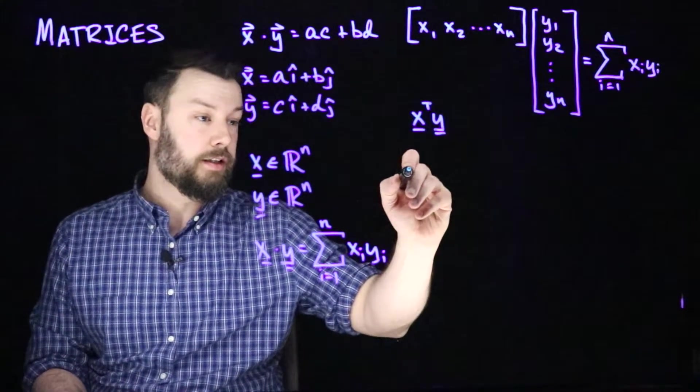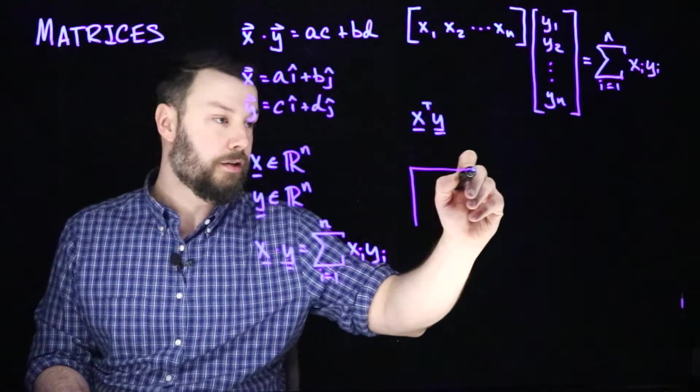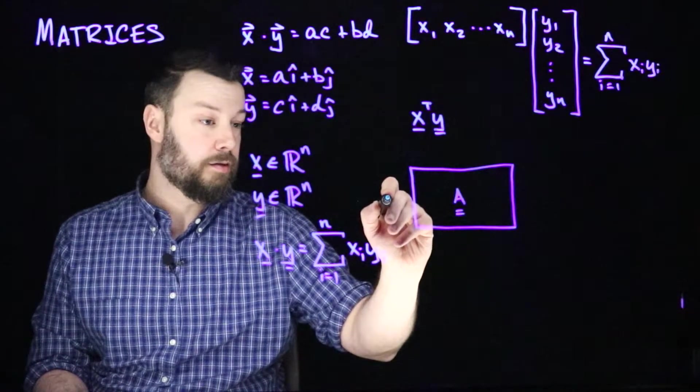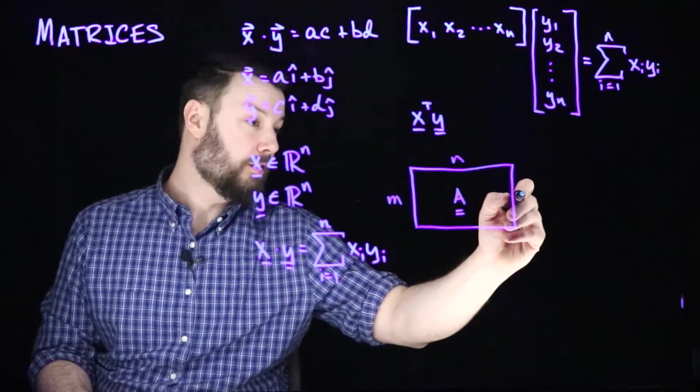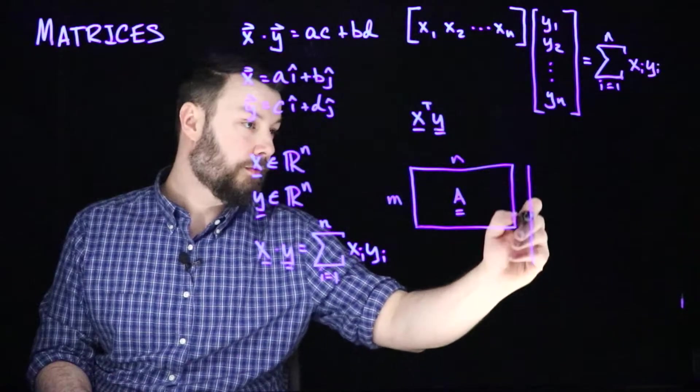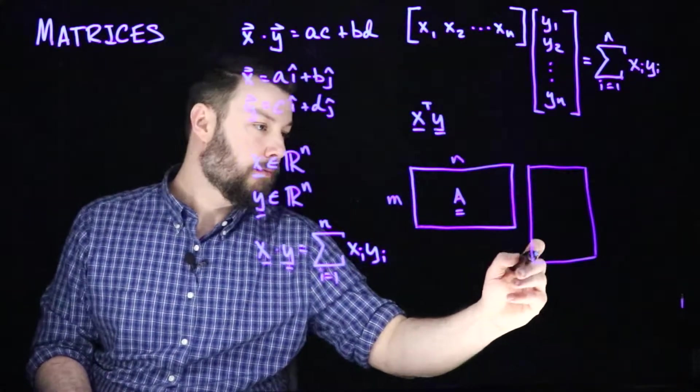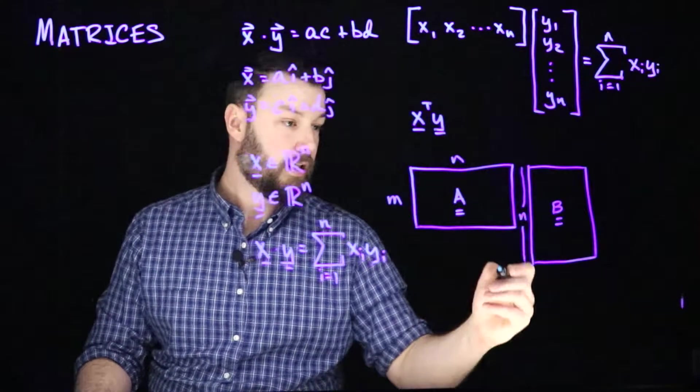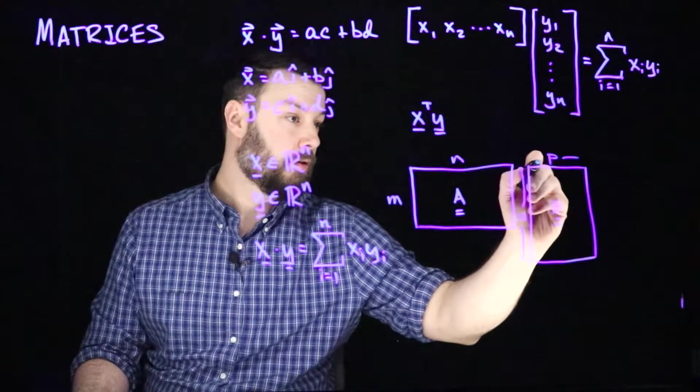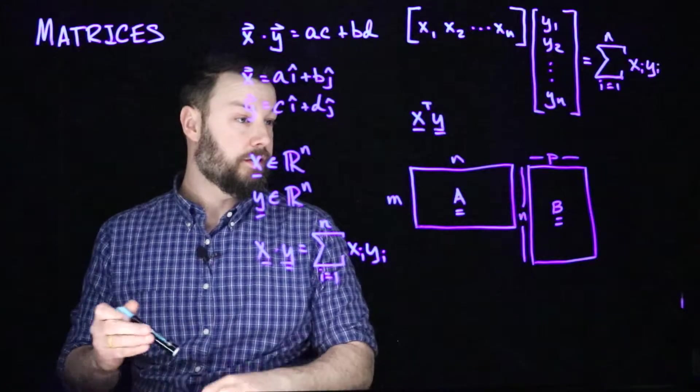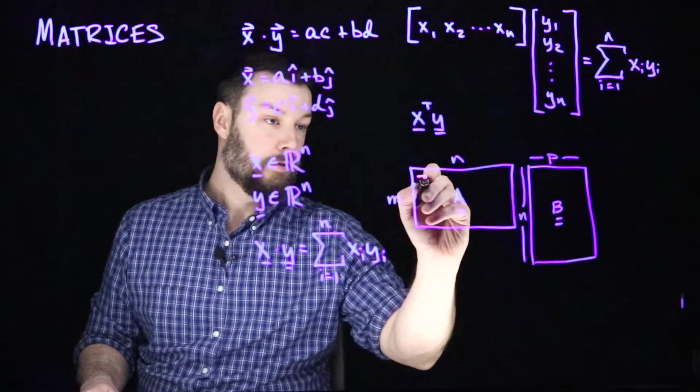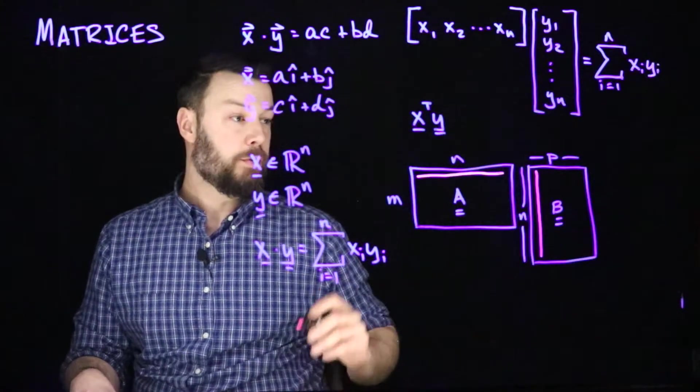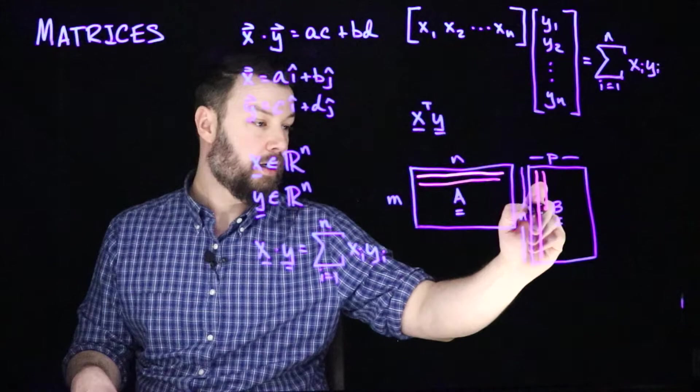So matrix multiplication is the idea that if we have two matrices that share a dimension. Let's imagine this is a matrix A with dimensions M by N, and then we have another matrix B with N as this dimension here, and then its other dimension is P. Then what's going to happen when we multiply these together is that we take every one of the M rows and we multiply it by the associated column in matrix B, and we do that for all possible pairs of rows and columns.